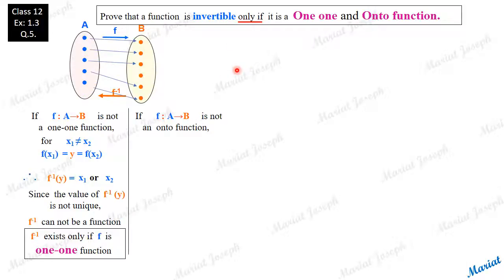Now the second part. Is it an onto function? Is it necessary that the function to be invertible, the function to be onto function? Again, we go by contradiction method. If possible, let us assume that f is not onto function.